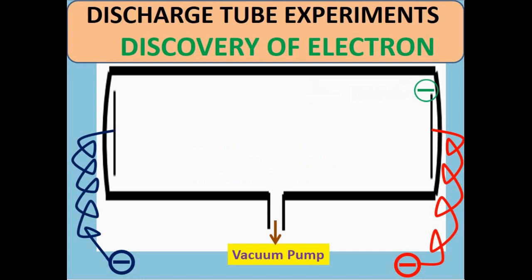When J.J. Thompson passed current from the tube, the tube glows like a bulb. He further reduced the pressure up to 0.001 atm.